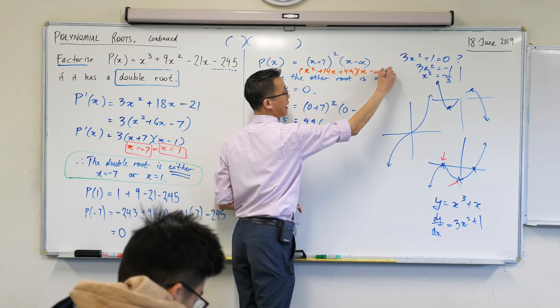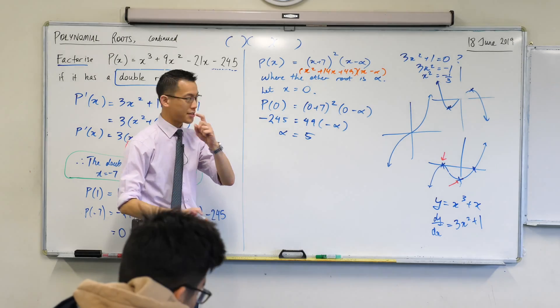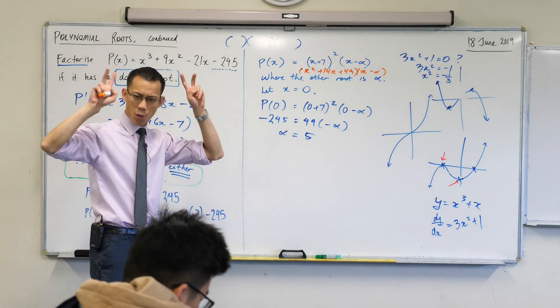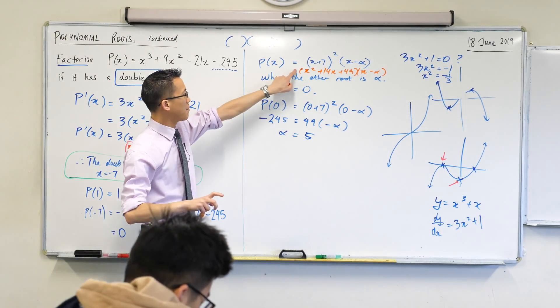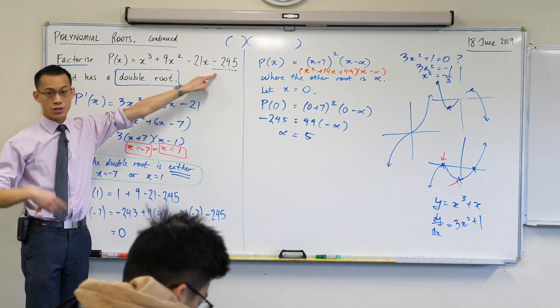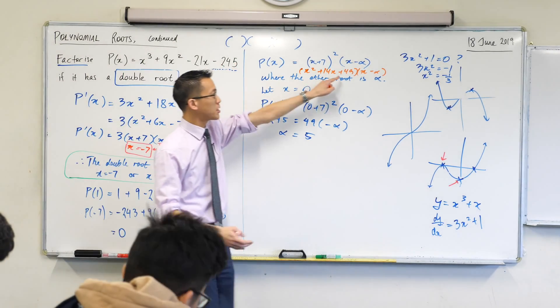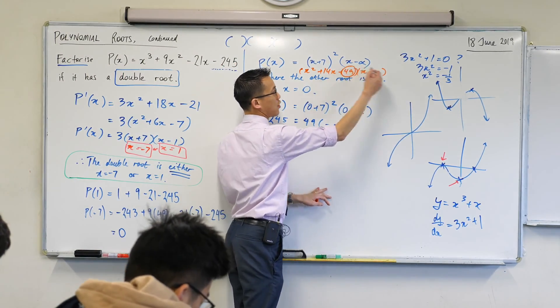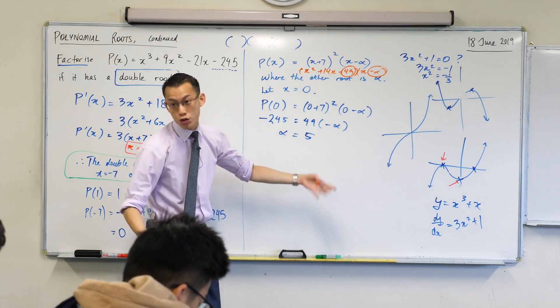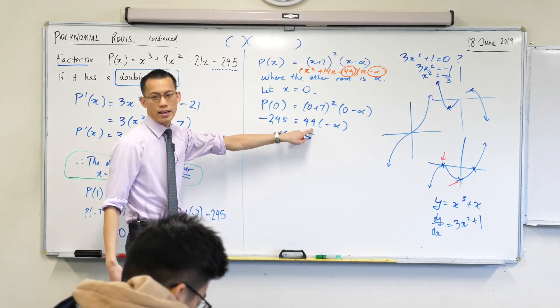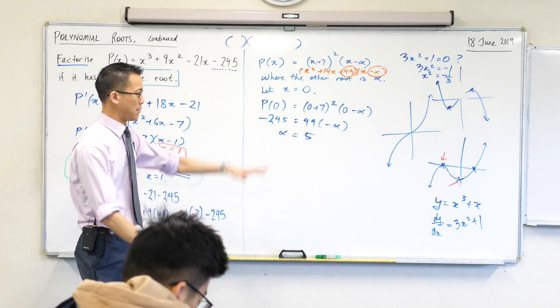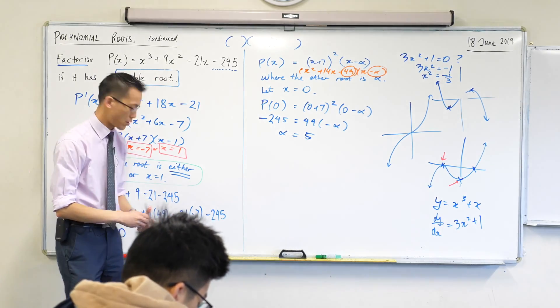And then you've got the x minus alpha still hanging on there. So what you can say is, I can, what we call this is comparing coefficients. So if I compare the constant coefficient over here, which is negative 245, it must be equal to the constant coefficient over here, which would be negative 49 alpha. But that's exactly what I end up with here. So essentially, yes, we can, but because that's the same thing that we've got here.